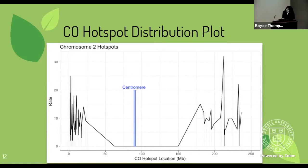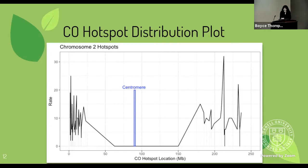Here is an example of one of the hotspot distribution plots I made, again in R. The y-axis is the rate and the x-axis is the hotspot location on the chromosome. This plot matches up with the general distribution of hotspots mentioned earlier — you can see spikes in the subtelomeric regions, mostly suppressed towards the center, and then more spikes down towards the end. This shows that our computational approach did actually work.